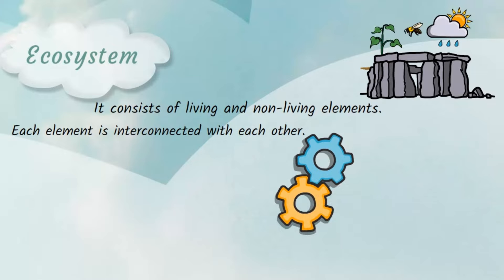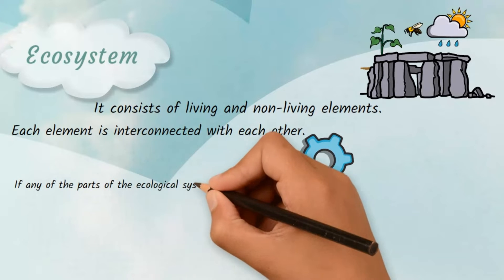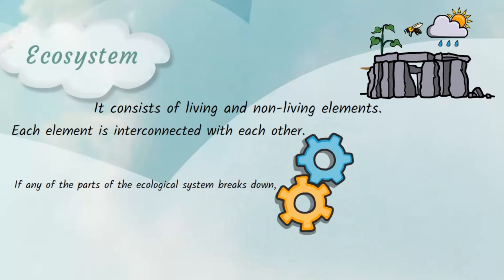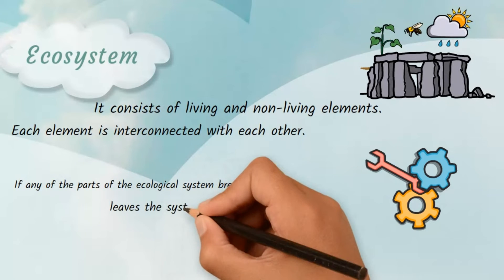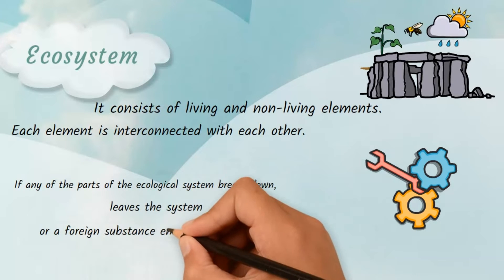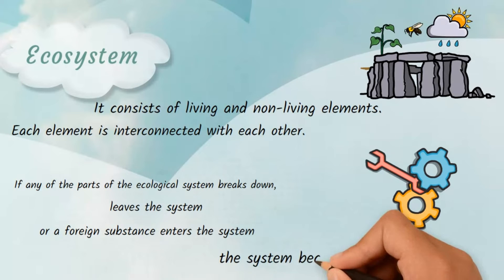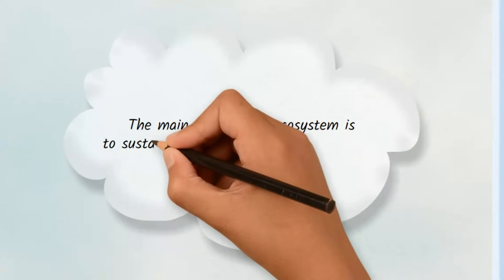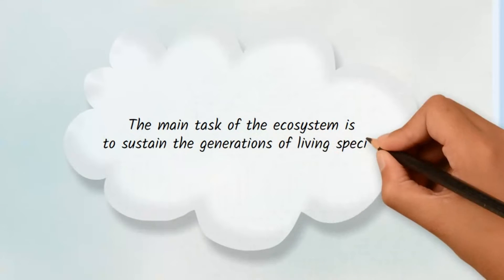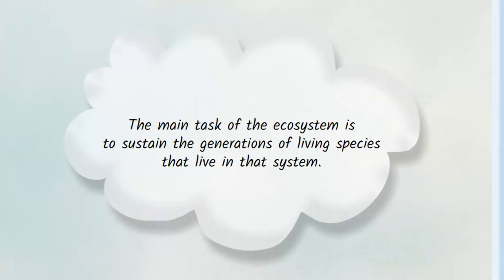If any of the parts of the ecological system breaks down, leaves the system, or a foreign substance enters the system, the system becomes unable to function. The main task of the ecosystem is to sustain the generations of living species that live in that system.